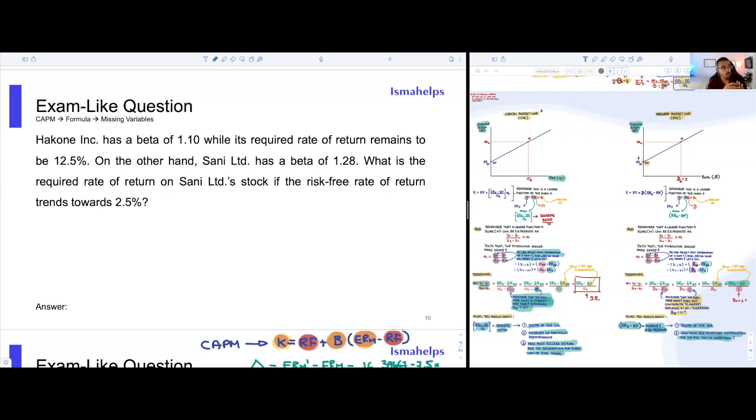Let's read the question. Hakone Inc. has a beta of 1.1 while its required rate of return remains to be 12.5%. On the other hand, Sani Limited has a beta of 1.28. What is the required rate of return on Sani's Limited stock if we know that the risk-free rate of return trends towards 2.5%?